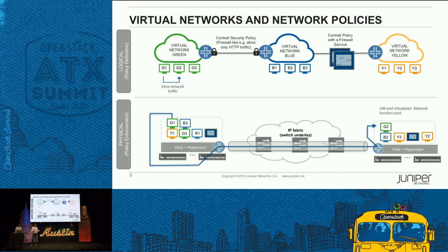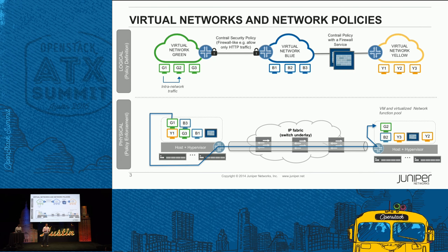There are two levels — the common framework for anything in the overlay world. You have the physical infrastructure and then the complete overlay networking. Everything we create has a fundamental concept of virtual network. Think of various virtual networks; in open Contrail, you can only connect them through network policies. Within a network, any of the VMs can talk to each other — for example, you have a green virtual network, a blue virtual network, and a yellow network.